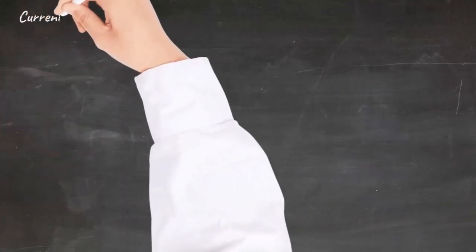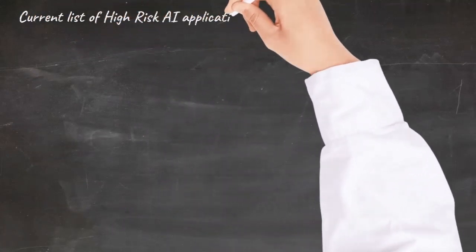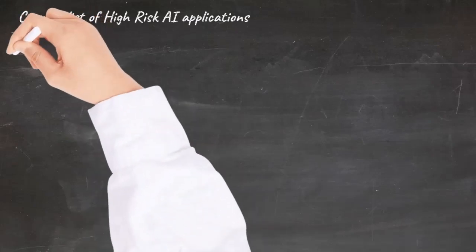In the approach chosen by the council, a generic list of AI application areas is designated as high-risk in Annex 3. This list can be adapted over time if new developments warrant that. It is, however, already a long list.